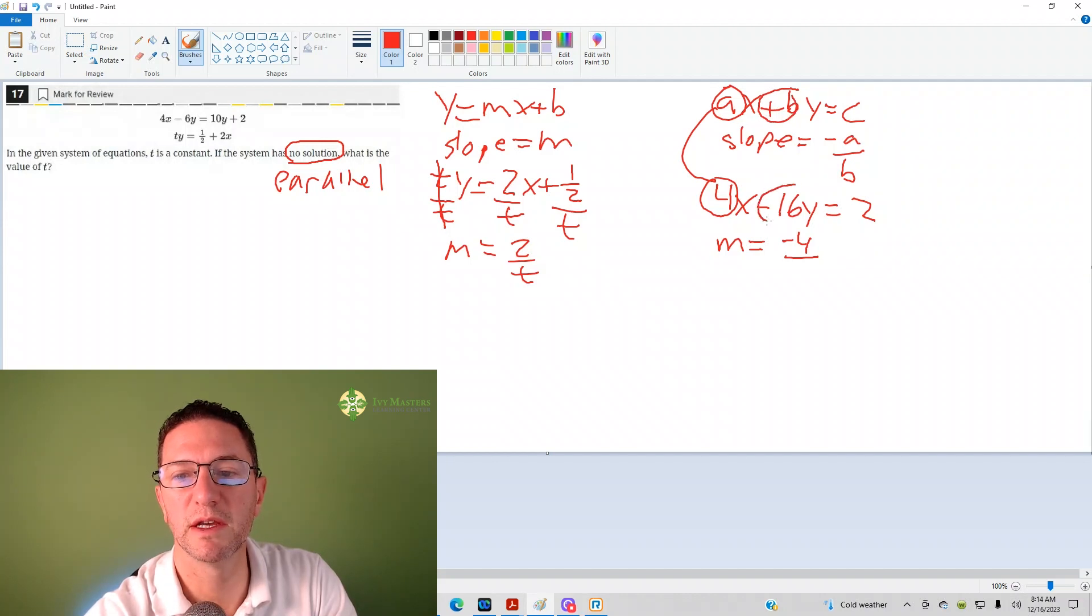And your b, here it says plus by, here it says minus 16. So your b is actually negative 16 over negative 16. And then negative over negative, this reduces to 1/4. So here's slope is 1/4.